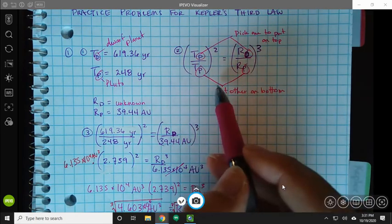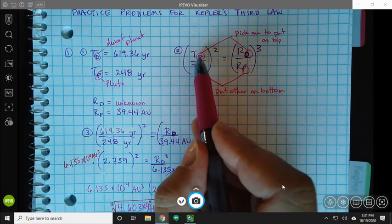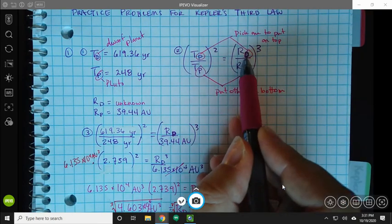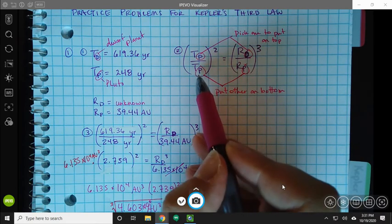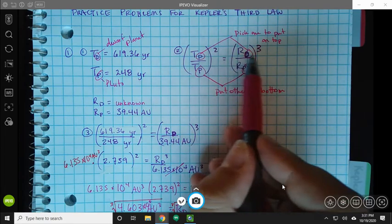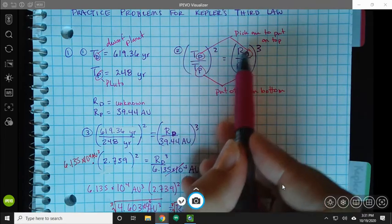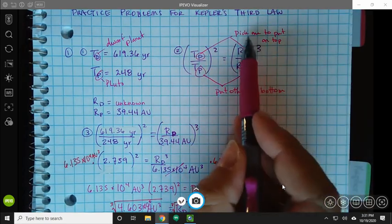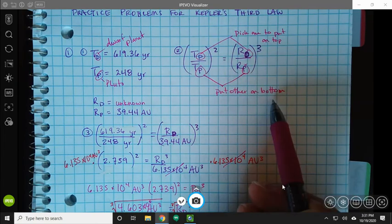I get to pick how I set it up as long as if I've got a TD here, I've got my RD here. If my TP is here, then my RP has to be here. So whatever planet you put the information for on the top has to be the same for the bottom. Okay. So pick one to put on the top, put the other one on the bottom.